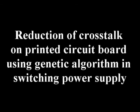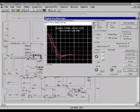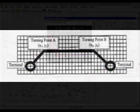Reduction of Crosstalk on printed circuit board using genetic algorithm in switching power supply. Crosstalk between PCB traces in switching power supplies may cause high electromagnetic interference emission. PCB layout plays an important part. A genetic algorithm is used to produce a layout with reduced Crosstalk.